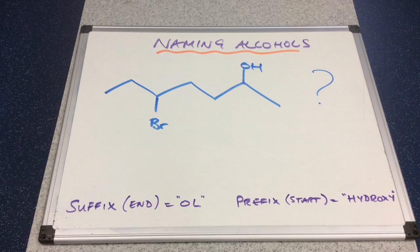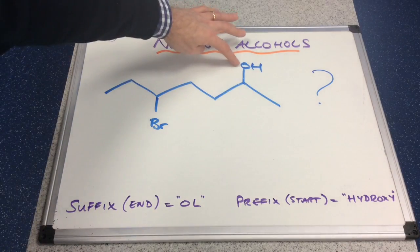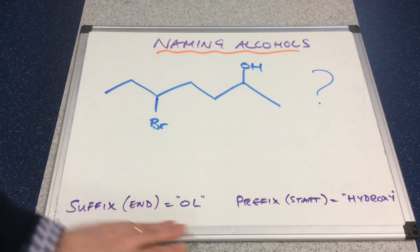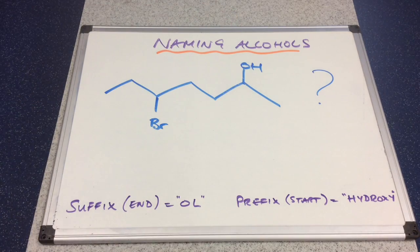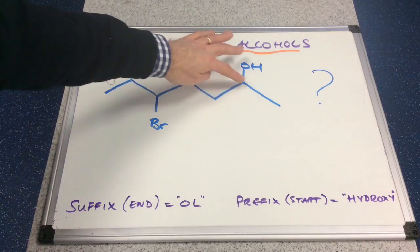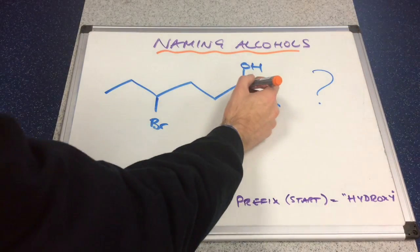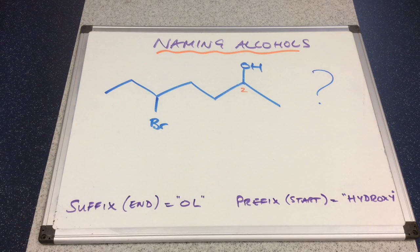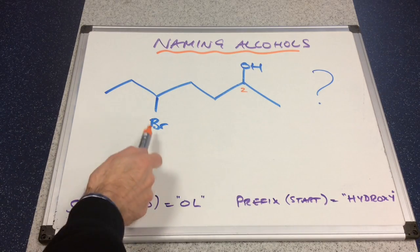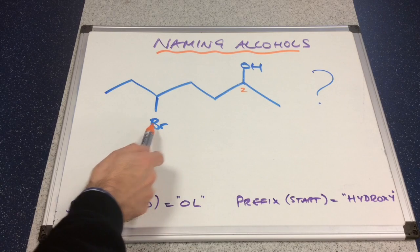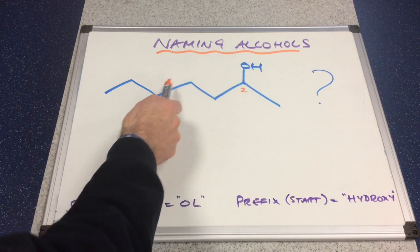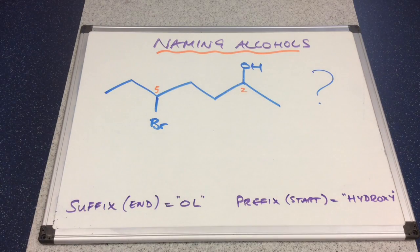Because the alcohol is the higher priority group — the OH group — we're going to base the name on an alcohol, so it's going to end in -ol, using the suffix. Counting the continuous chain: one, two, three, four, five, six, seven long — so that's hept-. The OH group is on carbon number two, so this is some kind of heptan-2-ol. Where's the bromo attachment? Counting along: one, two, three, four, five. So we would call this 5-bromoheptan-2-ol.